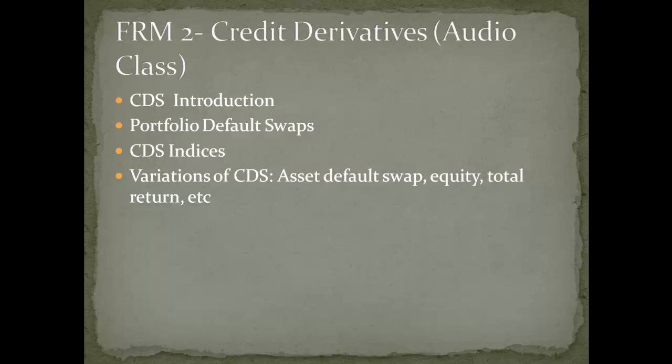In option terminology, the protection buyer — who is long a put — is short the credit risk and pays the premium or CDS spread, either upfront or as a running payment over time, to the protection seller — who is short a put and is long the credit risk. If there is no credit event by contract expiration, the protection buyer loses the premium paid. If there is a credit event during the term of the contract, the protection seller will make a contingent payment to the protection buyer. The credit event is analogous to exercising an in-the-money put option.